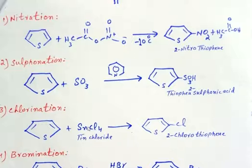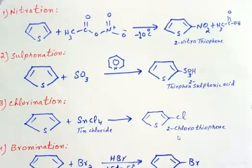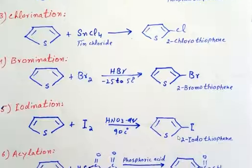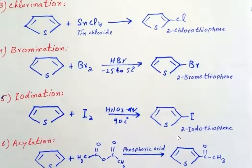In the chlorination reaction, tin tetrachloride is treated with thiophene in the presence of lead tetraacetate, producing 2-chlorothiophene. In the bromination reaction, bromine is directly treated with thiophene in the presence of hydrogen bromide, substituting bromine at position 2, giving 2-bromothiophene. In the iodination reaction, iodine is introduced at position 2 of thiophene, producing 2-iodothiophene.